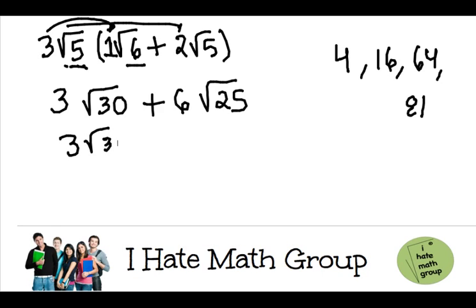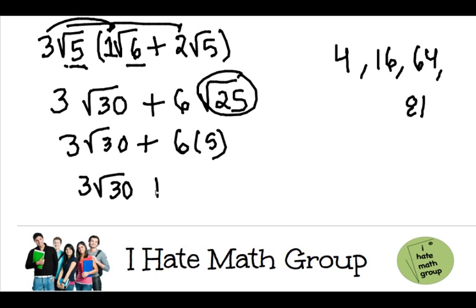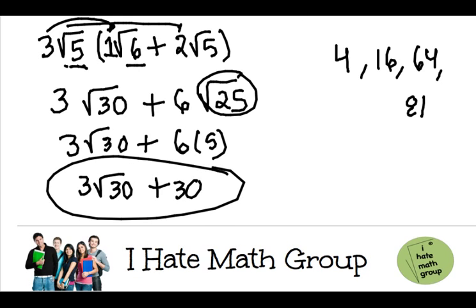But, right here, I can say that the square root of 25 is just 5. So, beautiful, 3 times the square root of 30 plus 30. And that's it. That's my final answer.